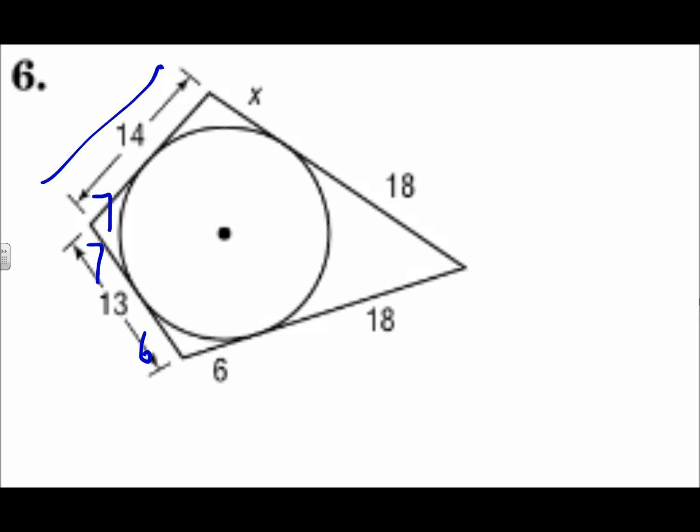I have the whole thing 14. 7 plus what gives you 14? Making another 7. And then, on the top corner, those are the same. So, 7 and 7 for there. And I can see already in the picture there, x has to equal 7.